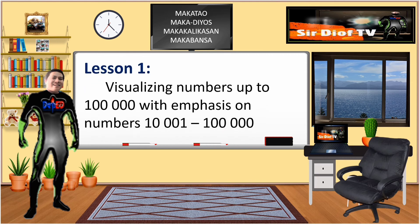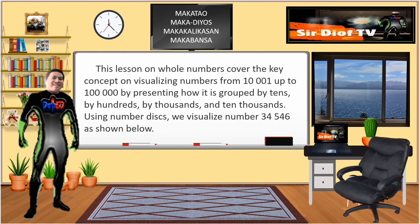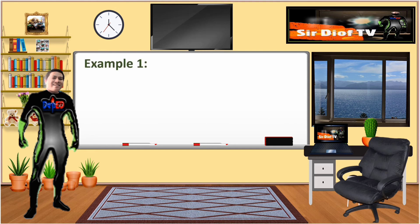Lesson 1: Visualizing numbers up to 100,000 with emphasis on numbers 10,001 to 100,000. This lesson on whole numbers covers the key concept of visualizing numbers from 10,001 up to 100,000 by presenting how they are grouped by tens, by hundreds, by thousands, and ten thousands. Using number disks, we visualize numbers — for example, 34,546 as shown below.